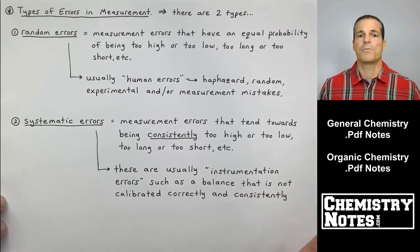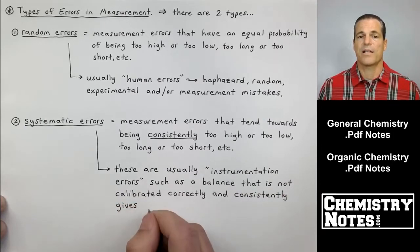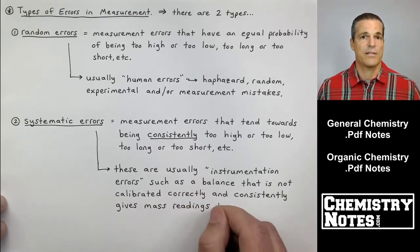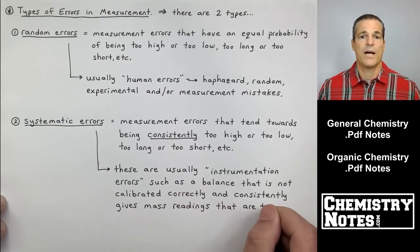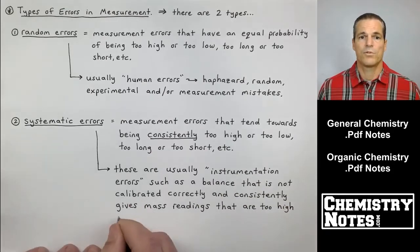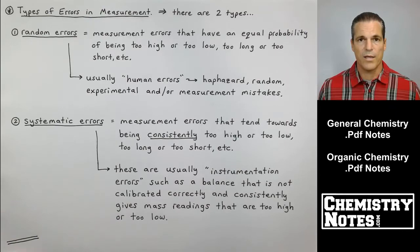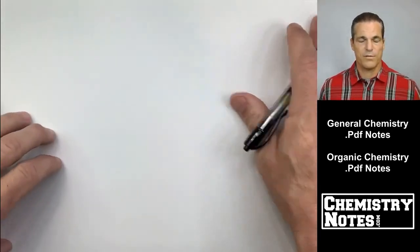These are usually instrumentation errors, such as a balance that is not calibrated correctly and consistently is giving mass readings that are too high or too low. But it's usually only one way or the other, not both.